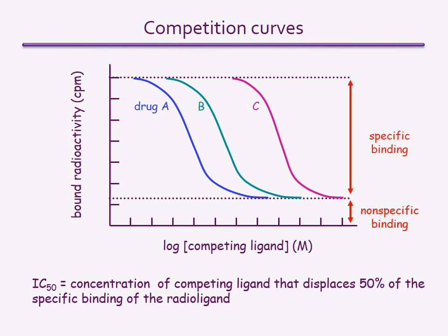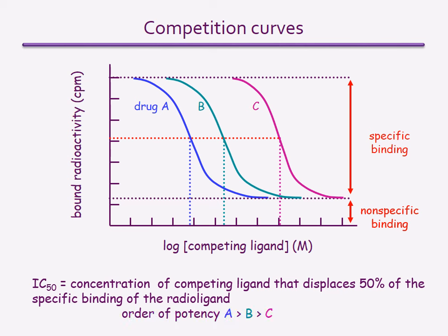The IC50 is measured by drawing a horizontal line at 50% of the maximum specific binding, then extrapolating the concentrations at which the curves for the competing ligands cross the horizontal line. In this case, the most potent drug is A and the least potent is C.